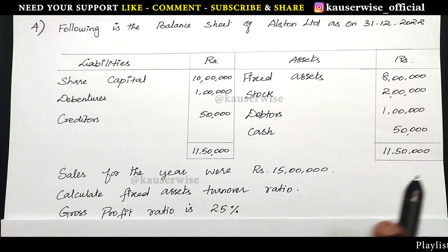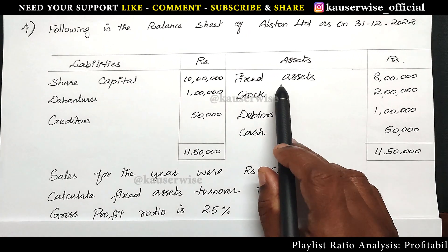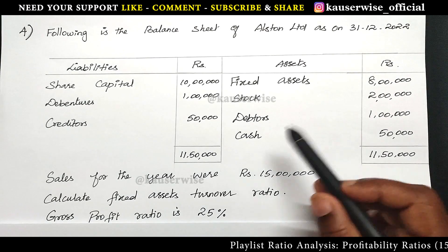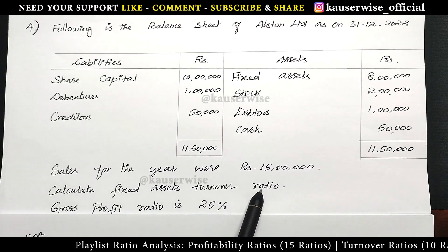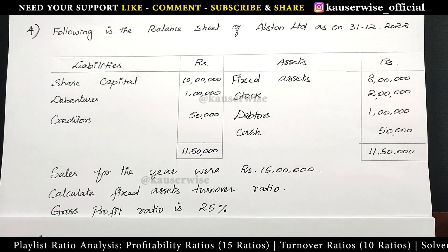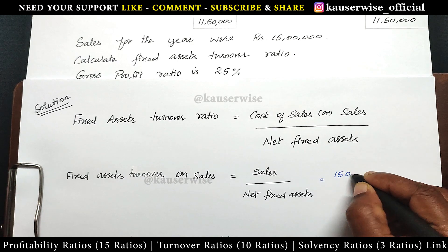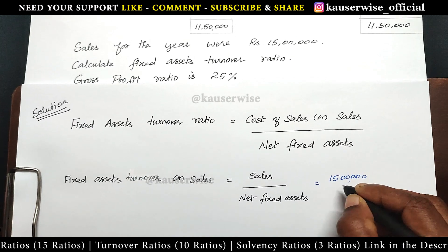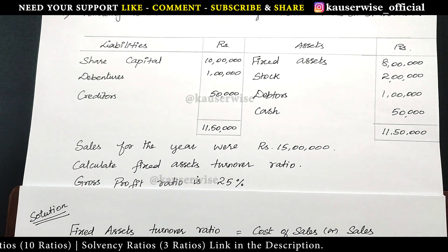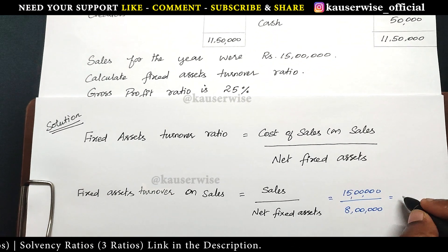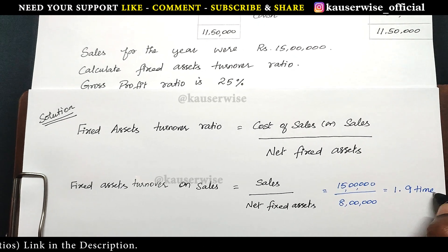Now see the problem. Here we have sales for the year — 15 lakhs — and fixed assets of 8 lakhs. There is no depreciation in this problem. Fixed asset turnover ratio on sales: sales 15 lakhs divided by net fixed asset 8 lakhs. The answer is 1.9 times. You can round up the figure.